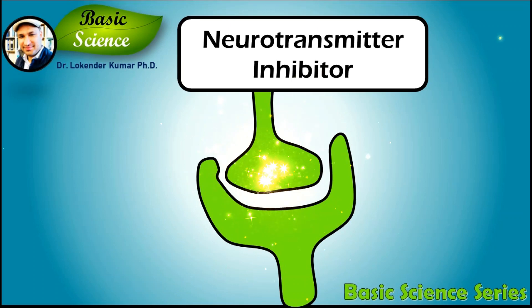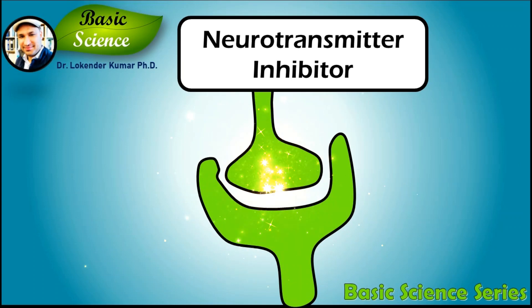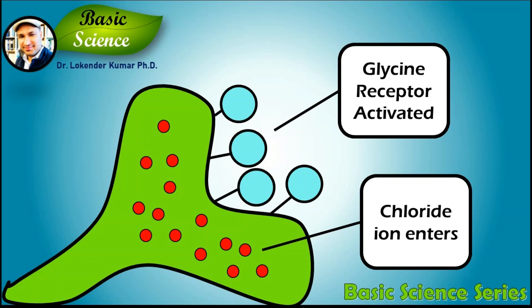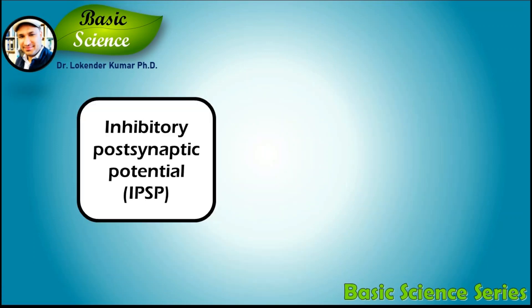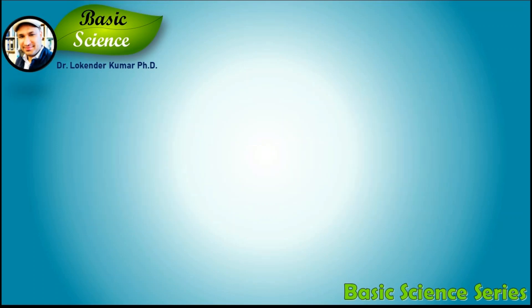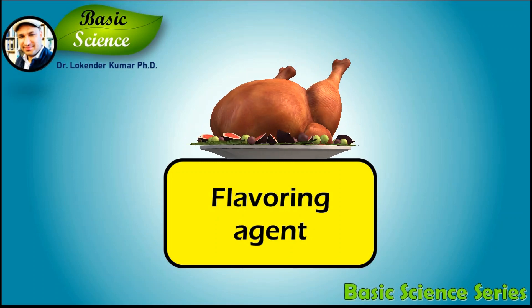One of the most important characteristics of glycine that most people are unaware of is that it is also a neurotransmitter inhibitor — meaning it interferes with the release of neurotransmitter signals within the spinal cord. When glycine receptors in neurons are activated, chloride enters the neuron via ionotropic receptors, causing an inhibitory post-synaptic potential.